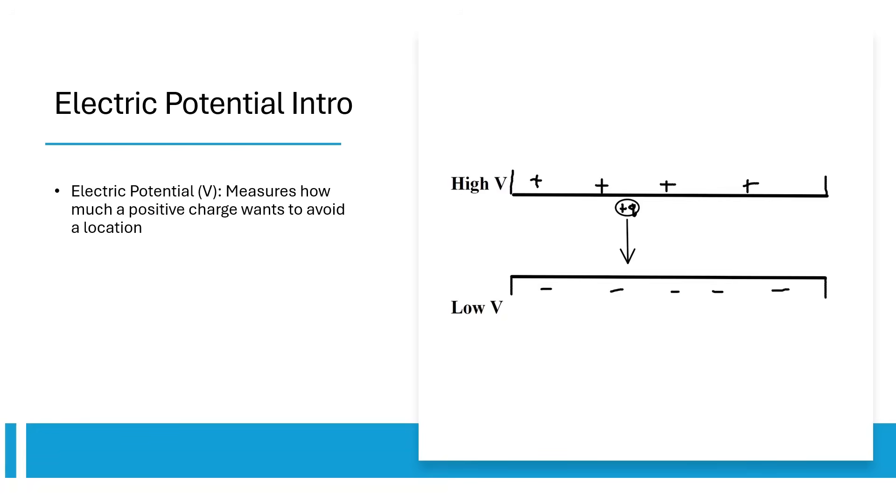Next, electric potential tells us how badly a positive charge wants to avoid a certain location. Electric potential energy, a new form of energy, is proportional to the electric potential a given charge feels. Since work equals negative change in potential energy, potential difference equals negative work over the charge.